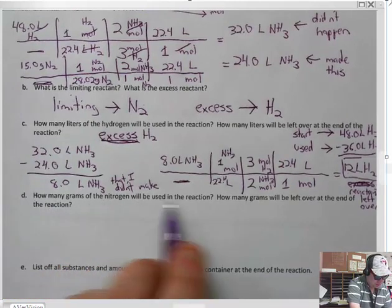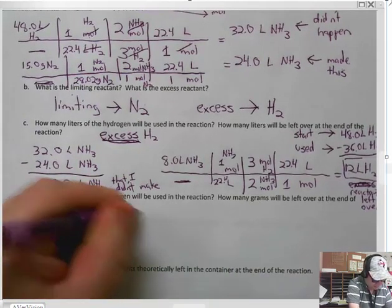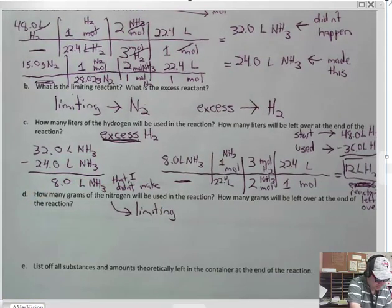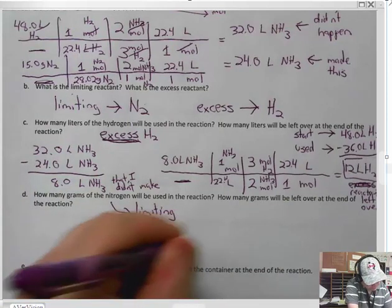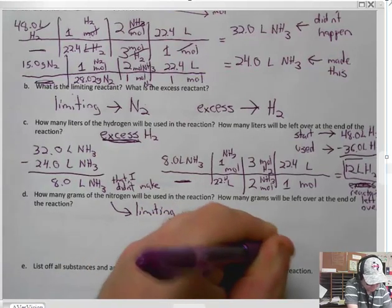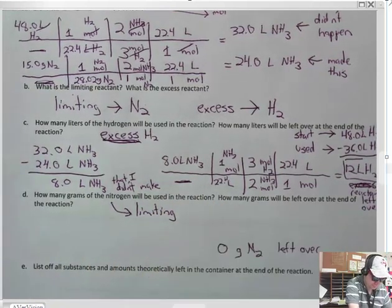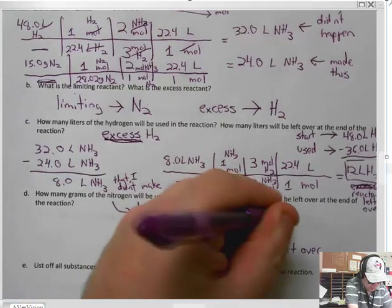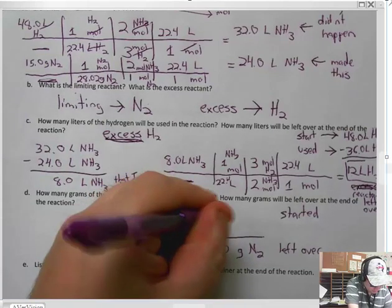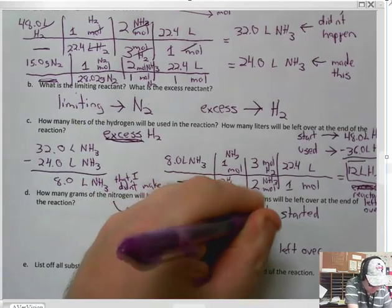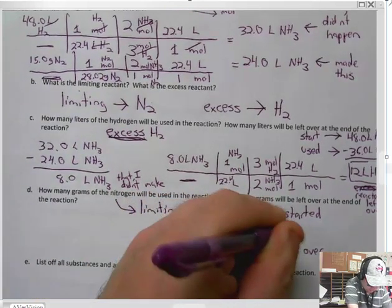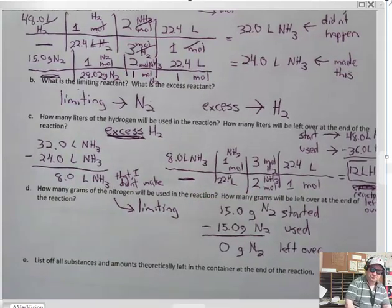How many grams of nitrogen will be used in the reaction? Well, the nitrogen, remember, is limiting, which means that the leftover is going to be zero grams of nitrogen left over. Since we started with 15 grams of nitrogen, we must have used 15 grams of nitrogen because we have none left over.